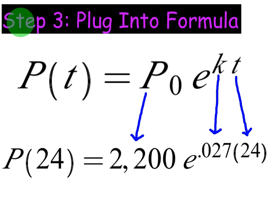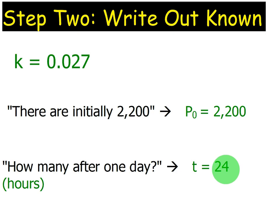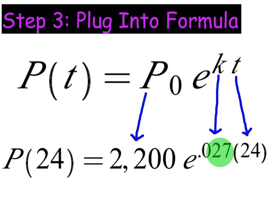The rest is simple. Step three, you're going to plug into the formula. That's the benefit of a proof. We don't have to do that proof every time. So we plug in 2200 for the initial population. We plug in 0.027 for K. And then 24 for T, meaning 24 hours.